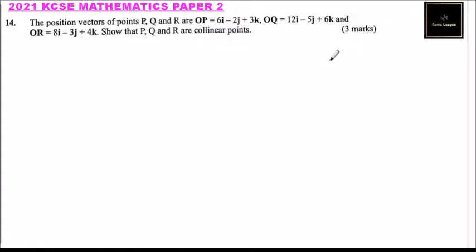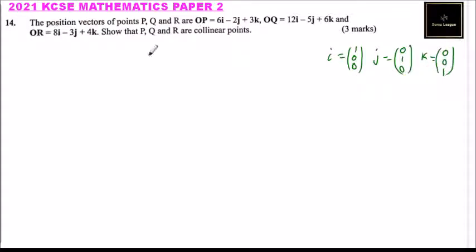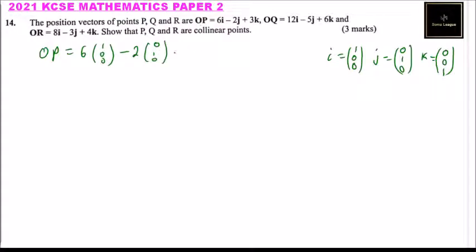What you should know is that the unit vector i equals (1,0,0), j equals (0,1,0), and k equals (0,0,1). So you can remove the unit vectors and write OP as 6(1,0,0) plus 2(0,1,0) plus 3(0,0,1), which gives you the coordinate form (6, 2, 3) — that's how you convert.